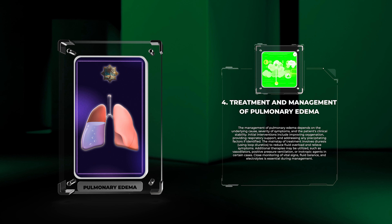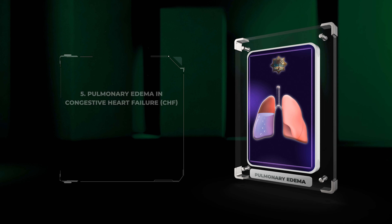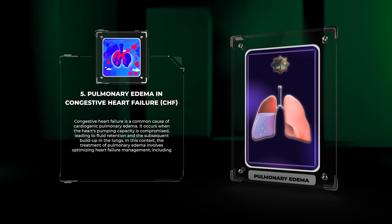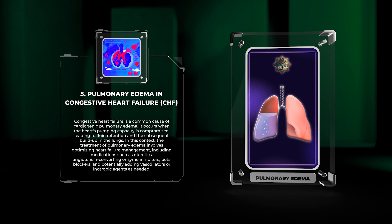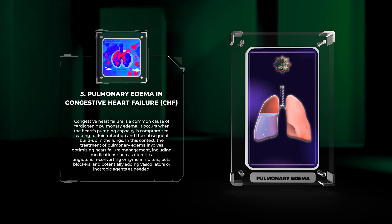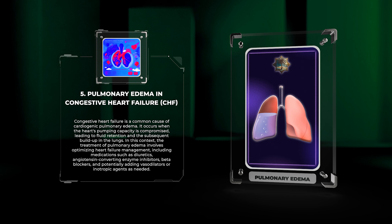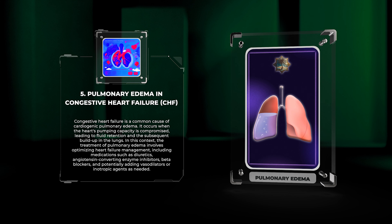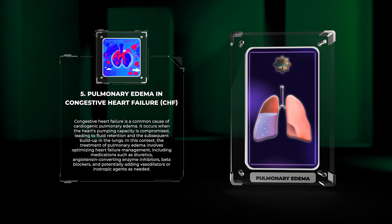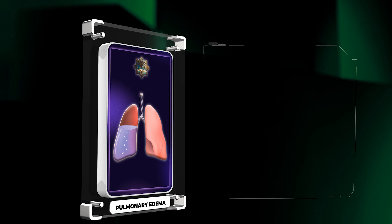Close monitoring of vital signs, fluid balance, and electrolytes is essential during management. Congestive heart failure is a common cause of cardiogenic pulmonary edema, occurring when the heart's pumping capacity is compromised, leading to fluid retention and buildup in the lungs. Treatment involves optimizing heart failure management with diuretics, ACE inhibitors, beta blockers, and potentially vasodilators or inotropic agents as needed.